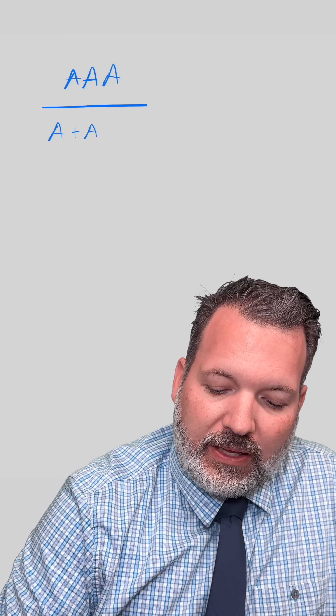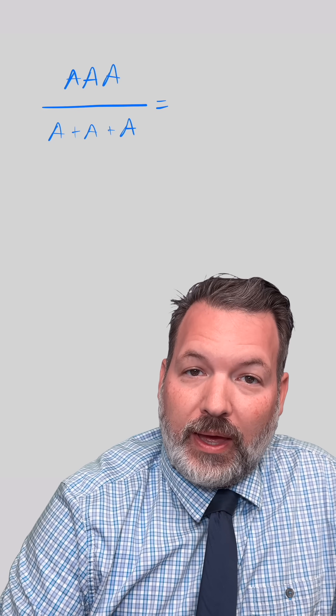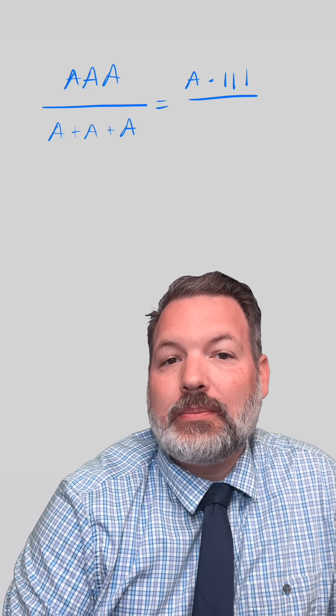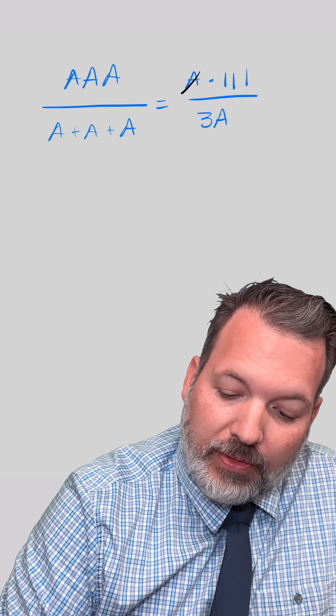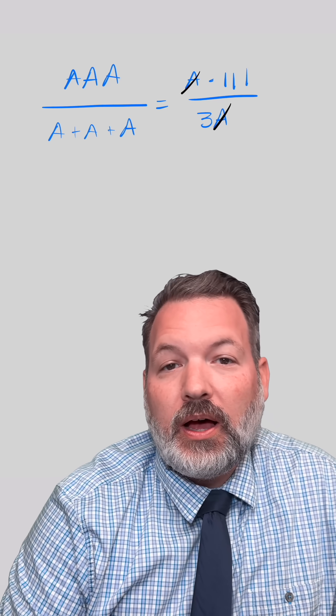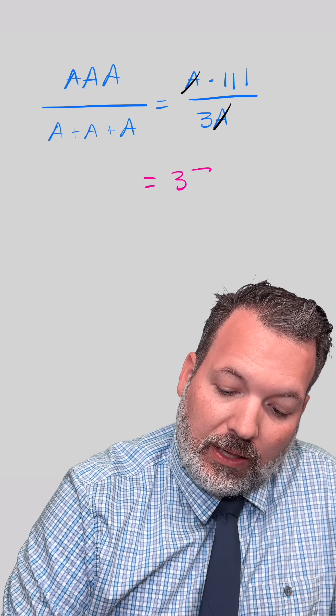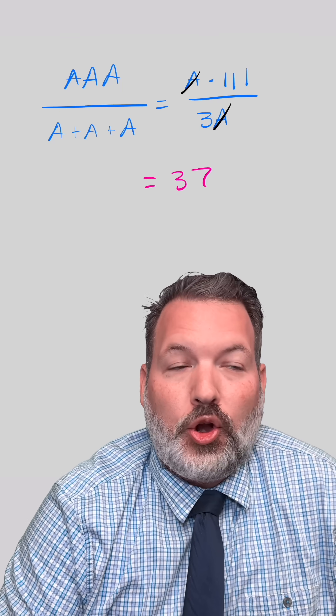If you imagine taking some three-digit number, we're going to call it AAA — not A times A times A, but a three-digit number where every single digit is the digit A — and we imagine dividing this by A plus A plus A, we can rewrite the numerator and the denominator in a useful way. The numerator is the same thing as A times 111. The denominator, A plus A plus A, is 3A. We have an A in common on numerator and denominator, so we can factor that out, which leaves us with 111 divided by 3. And 111 divided by 3 is 37. This is why when A was a single digit, we were getting 37 no matter what A was.